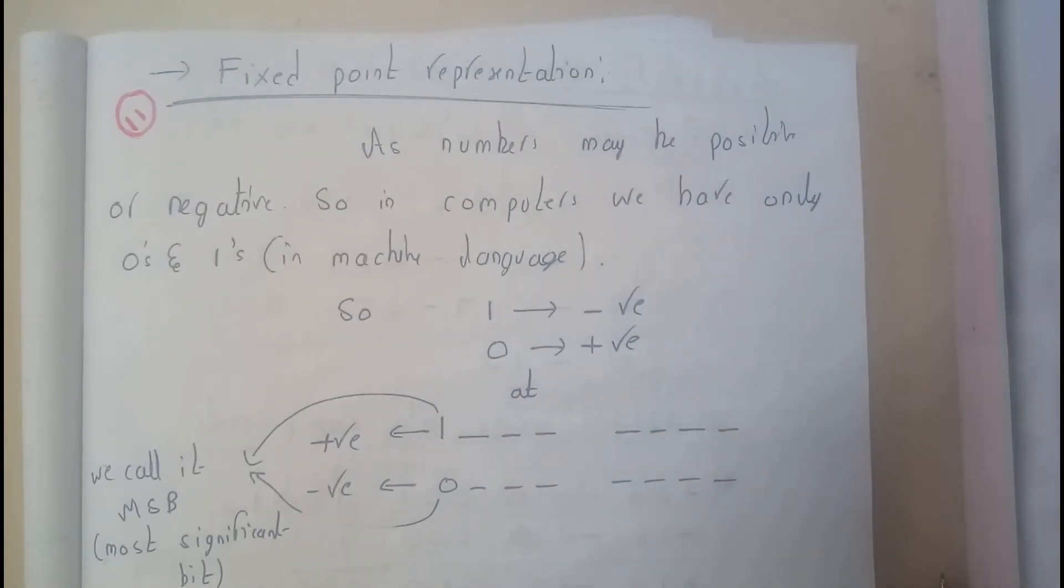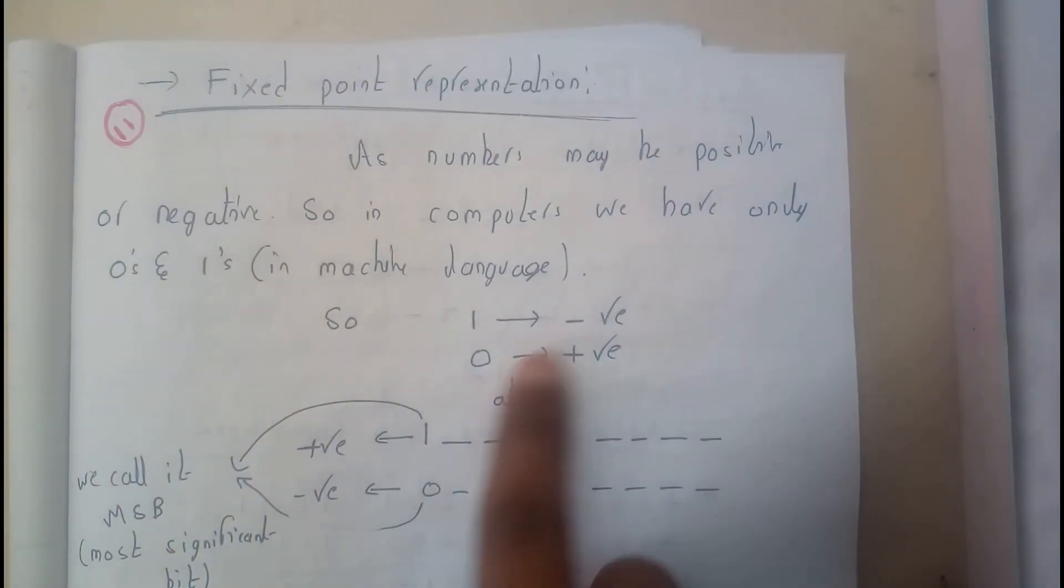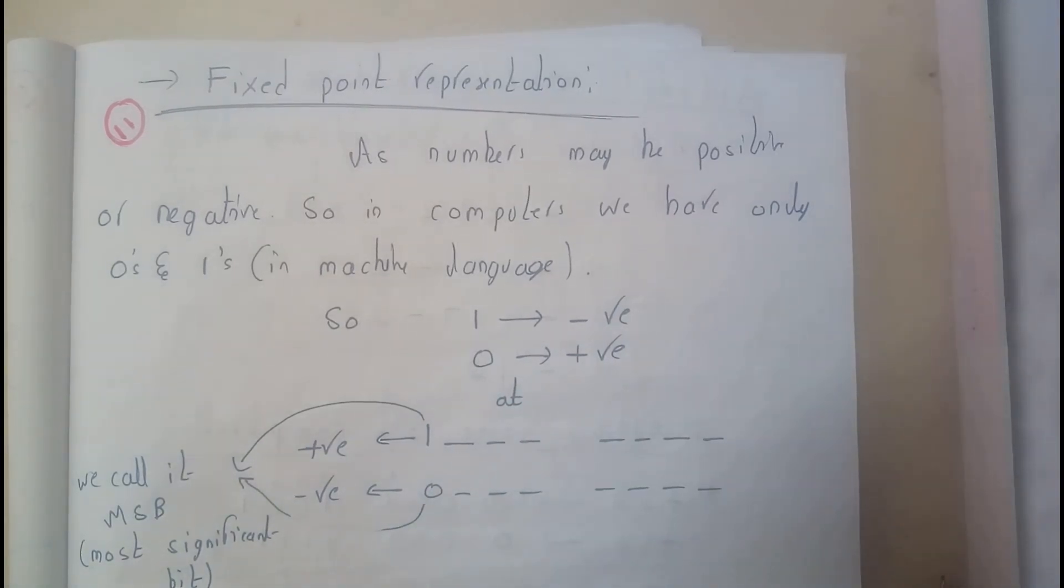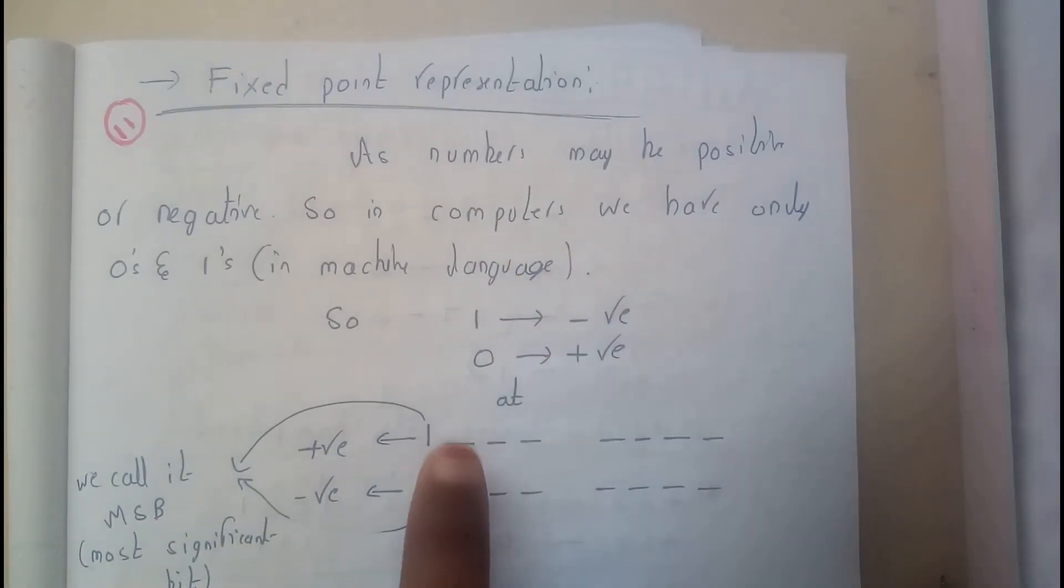Basically the question will be: how can we identify whether the number is positive or not? So one indicates that the number is negative and zero indicates that the number is positive.